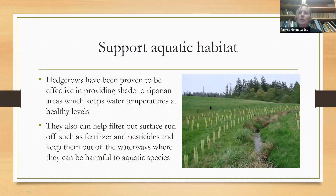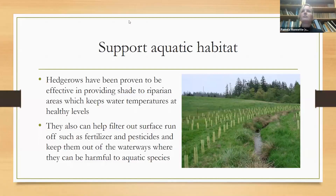If you don't have fences or aren't putting fences up, really dense plantings along riparian areas can also help keep livestock out, where they can further erode streams. This depends on what your goals are.